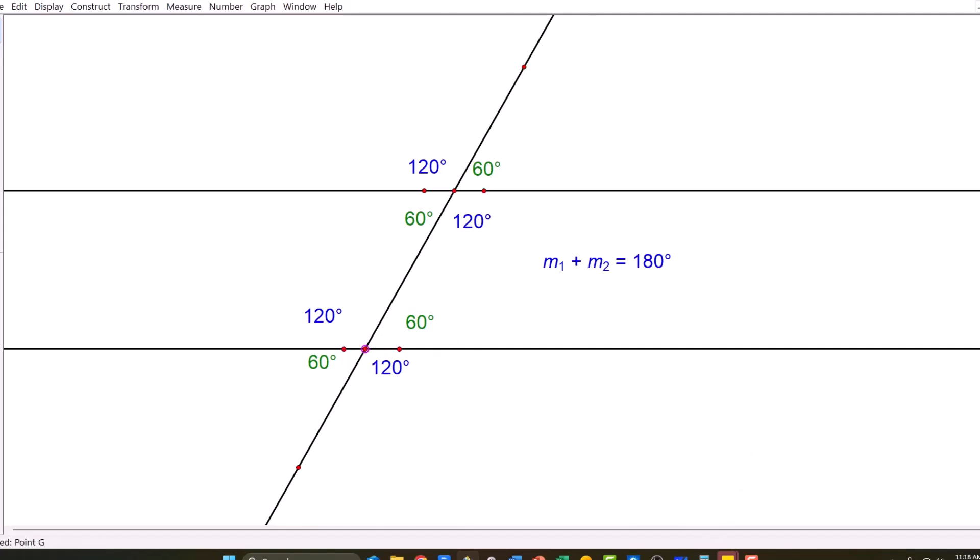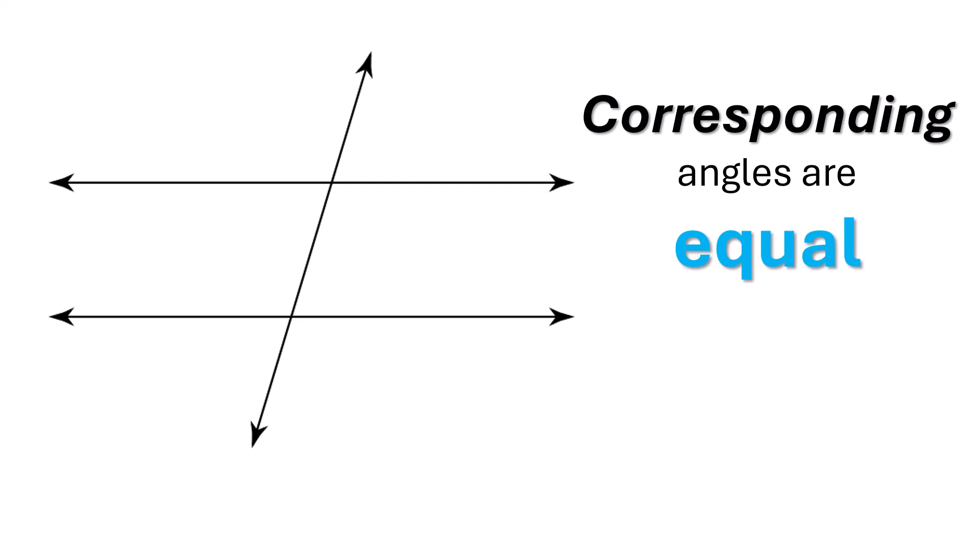Grab your notebook. We are going to put all this information into your notes. Corresponding angles are equal or congruent. And remember where your corresponding angles are. Here they all are that are on the diagram and they're color-coded. So the yellows go together, the purples go together, and they're equal.